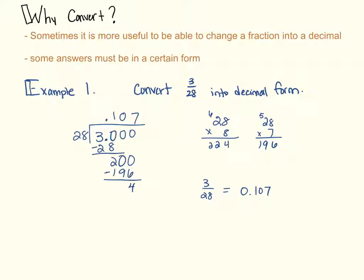If I had 3 twenty-eighths of a pie, that means I have 107 thousandths of a pie.